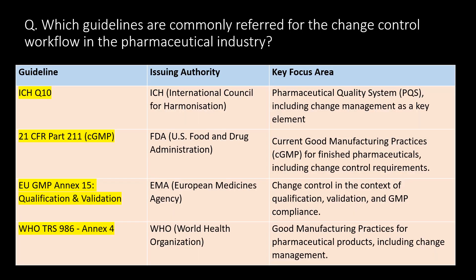Which guidelines are commonly referred to for the change control workflow in the pharmaceutical industry? The key guidelines include: ICH Q10 (International Council for Harmonization) — pharmaceutical quality system including change management; 21 CFR Part 211 — current good manufacturing practices for finished pharmaceuticals including change control requirements; EU GMP Annexure 15 (EMA) — qualification and validation, covering change control in the context of GMP compliance; and WHO TRS 986 — Good Manufacturing Practices for pharmaceutical products including change management.